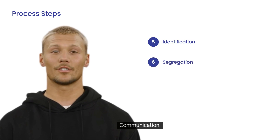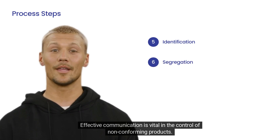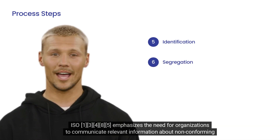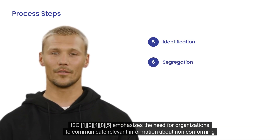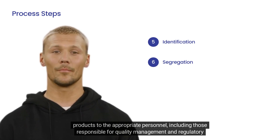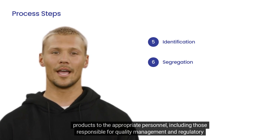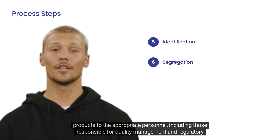6. Communication. Effective communication is vital in the control of non-conforming products. ISO 13485 emphasizes the need for organizations to communicate relevant information about non-conforming products to the appropriate personnel, including those responsible for quality management and regulatory compliance.